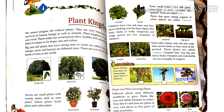Plant kingdom is very vast and vivid. Plants make our environment alive, healthy, and colorful. Plants are unique in their shape, size, and color. All plants are different in their size and color.